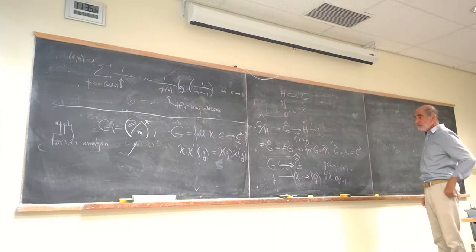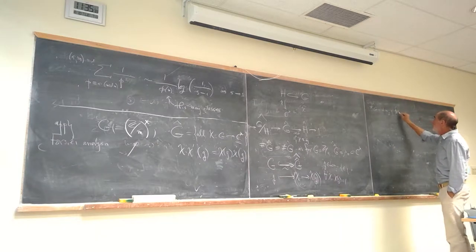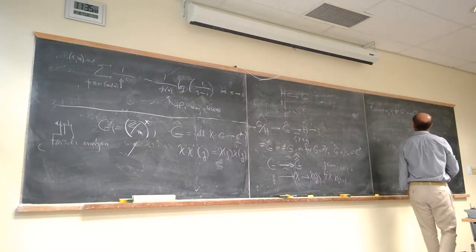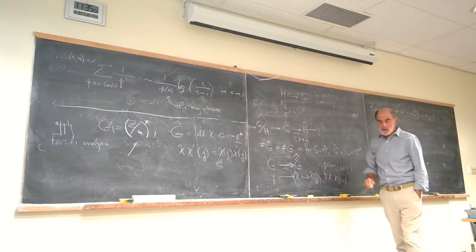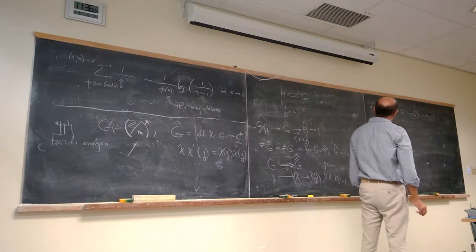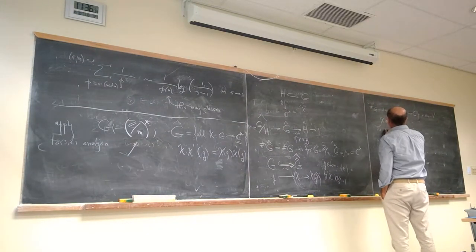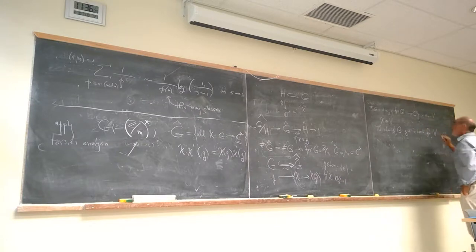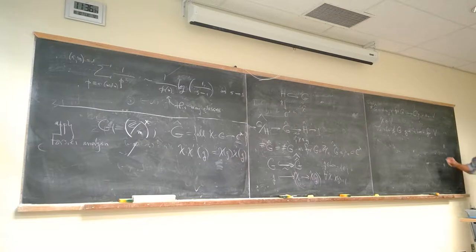Since the order of G equals the dimension of the complex vector space V of functions from G to C, and the characters are elements of that vector space, the important theorem — the beginning of Fourier analysis — is that the characters give a basis for this space. Since there are as many characters as the dimension of V, you can either prove they're linearly independent or that they span. I'll show you they span.